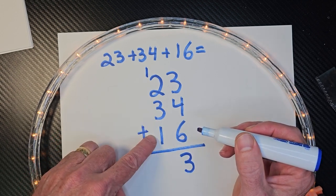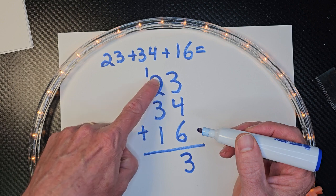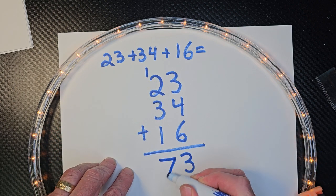So again, I'm going to add these numbers. 3 plus 1 is 4. And then 5, 6. And then 7. So we have 73.